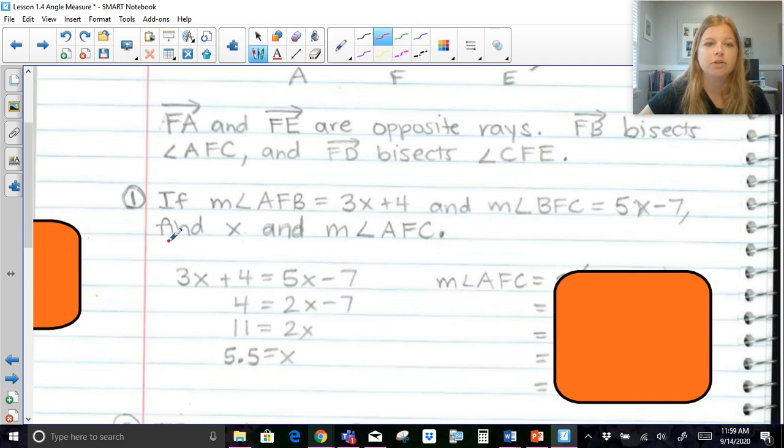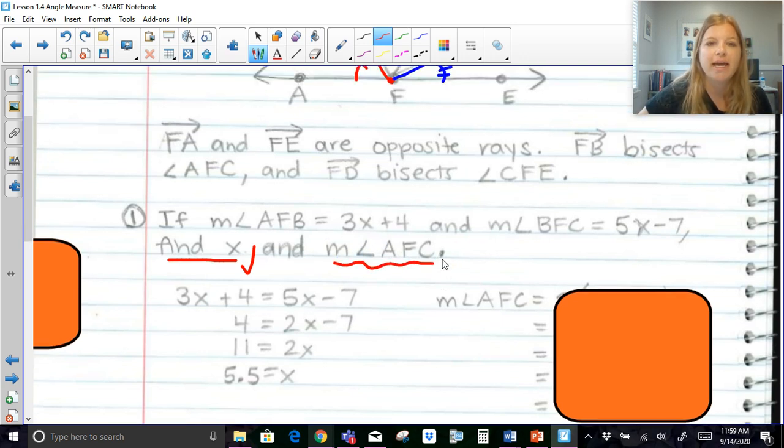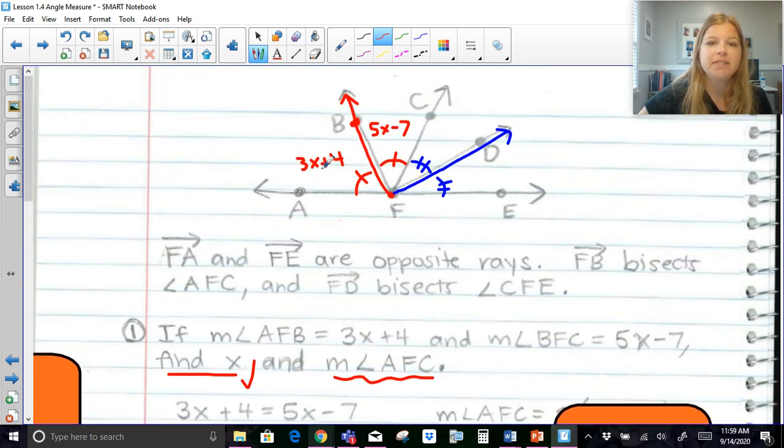We always got to be careful, guys. Usually there's more than one question, one part of the question rather. Now it's saying find the measure of angle AFC. So AFC is the entire big angle. So I have a couple ways I could do this. I could do 3X plus 4 plus 5X minus 7, add these expressions up, and substitute the 5.5 in for X.